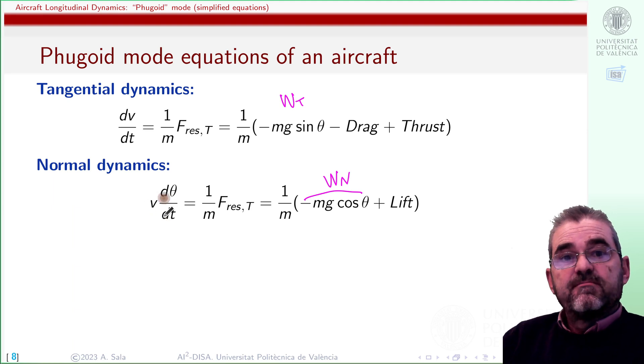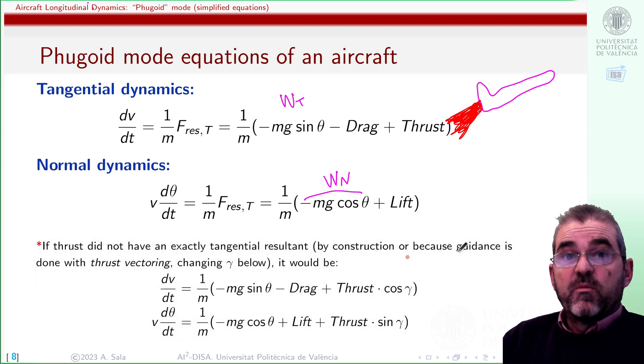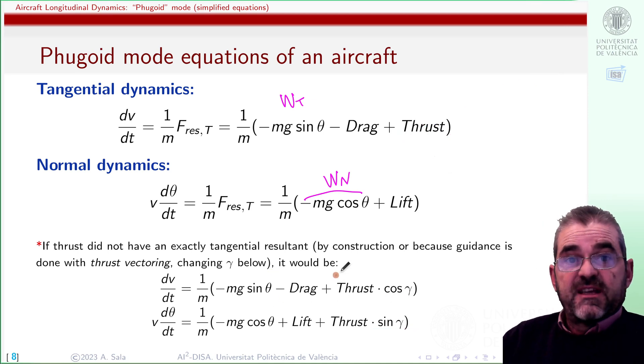Recall that we have this angular speed times linear speed, this product of speeds due to the non-inertial nature of our reference frame. As a remark, if thrust were not perfectly aligned with the tangential air speed direction either by construction or because we have thrust vectoring and we can change the direction of the thrust, well in such a case we will add some sin and cos of this angle between air speed and thrust vector, but for simplicity we will not consider that here.